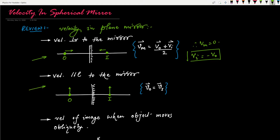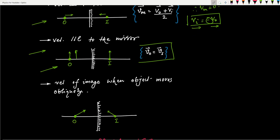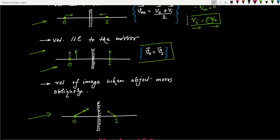The second concept: velocity parallel to the mirror. When the object is moving parallel to the mirror, the velocity of the object equals the velocity of the image, and both move in the same direction. In the earlier perpendicular case, velocities had the same magnitude but opposite direction, hence the negative sign. The last one we discussed was velocity of the image when the object moves obliquely. I discussed a question to explain that concept in part 3 of the video series, so check that video before diving into this.